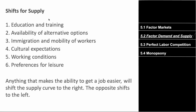Now there are several shifts for supply. Basically, it's anything that makes the ability to get a job easier — that will shift supply to the right; the opposite shifts to the left. Things like education and training, availability of alternative options, immigration, cultural expectations, working conditions, and preferences for leisure. These factors make getting a job easier and easier, so they make supply larger. Shift it to the right if any of these change.